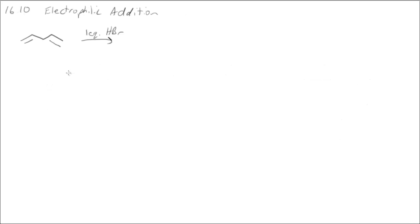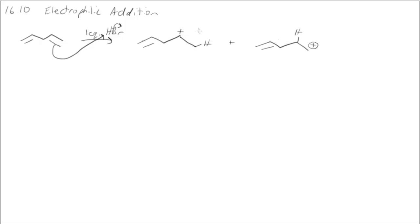Section 16.10 looks at electrophilic addition and the difference between an isolated diene and a conjugated diene. If I have an isolated diene — 1,4-pentadiene — and add HBr, going through the standard mechanism, electrons come from the alkene to the proton and then go into bromine. You have to decide where to put the proton versus where the positive charge goes. The two choices are a secondary carbocation or a primary carbocation. This is not conjugated — there is an sp3 carbon in between, so this is not an allylic position. It is simply secondary versus primary carbocation, and the secondary is better.